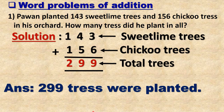The information given to us: 143 sweet lime trees and 156 chickoo trees. What we are supposed to find out: total number of trees. Method: addition. Now we will add both numbers. 3 plus 6 is 9, 4 plus 5 is 9, 1 plus 1 is 2. So 299. The final answer is 299 trees were planted.